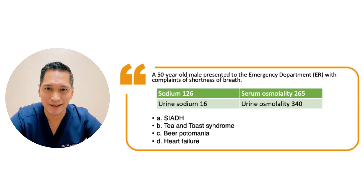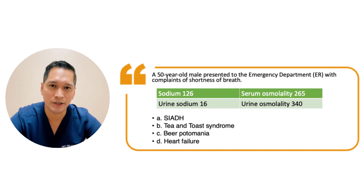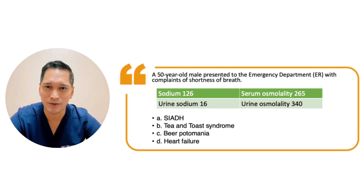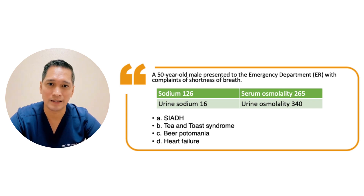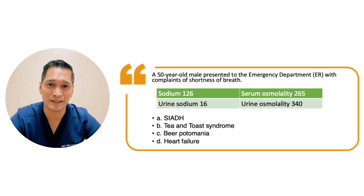A 50-year-old male patient presents to the ER with shortness of breath. Lab findings showed serum sodium 126, urine osmolality 340, and urine sodium 16. The most probable cause of his hyponatremia is heart failure. In heart failure, hyponatremia is characterized by an increased extracellular fluid volume but a decreased effective circulating blood volume. The release of ADH is appropriate, and due to the reduced effective circulating blood volume, the kidneys conserve sodium, leading to urine sodium excretion of less than 20. TNT syndrome and beer potomania are associated with a urine osmolality of less than 200 to 300. SIADH is associated with a urine sodium of more than 40.